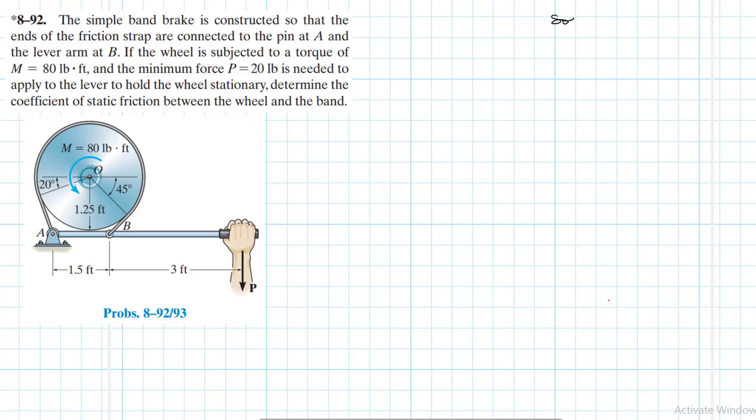This problem comes from the Engineering Mechanics Statics textbook, 13th edition by R.C. Hibbeler. We have a wheel with a simple band brake wrapped around it, connected at A and B. We need to determine the coefficient of static friction between the wheel and the band that allows the wheel to remain stationary when a minimum force of P equal to 20 pounds is applied.